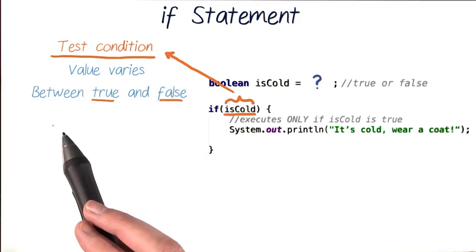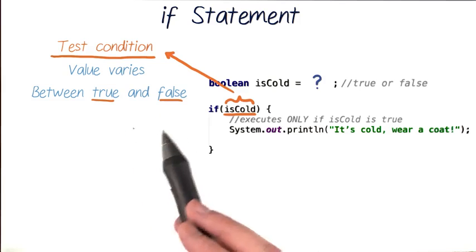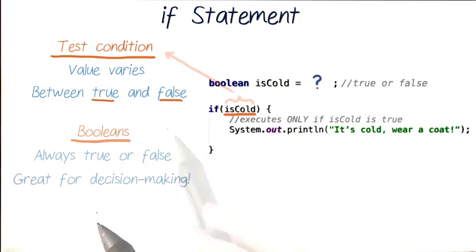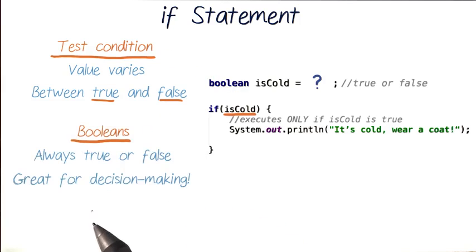And this test condition has to evaluate to either true or false. And what variable do we know that does that? Booleans. Booleans can only have the value true or false and are perfect for decision making.